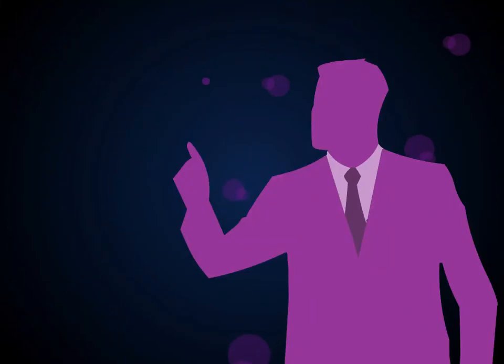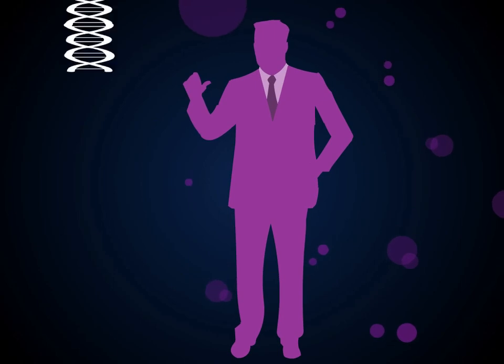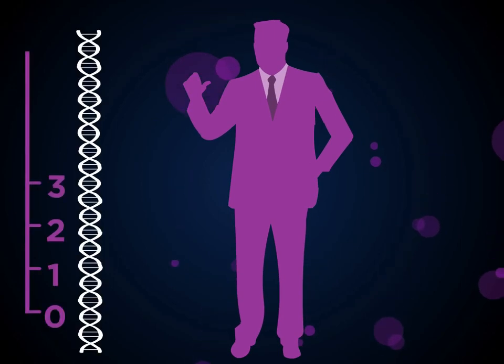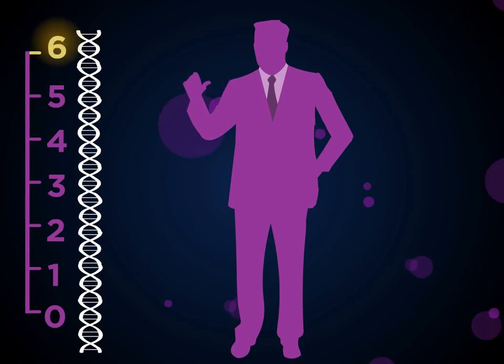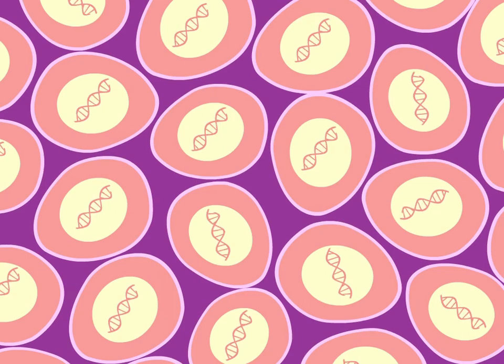Kind of like a fingerprint. One copy contains the complete instructions for building an organism. It's long. Stretched all the way out, a single set of human DNA is over six feet. And there's an identical copy inside the nucleus of nearly every cell in the body.